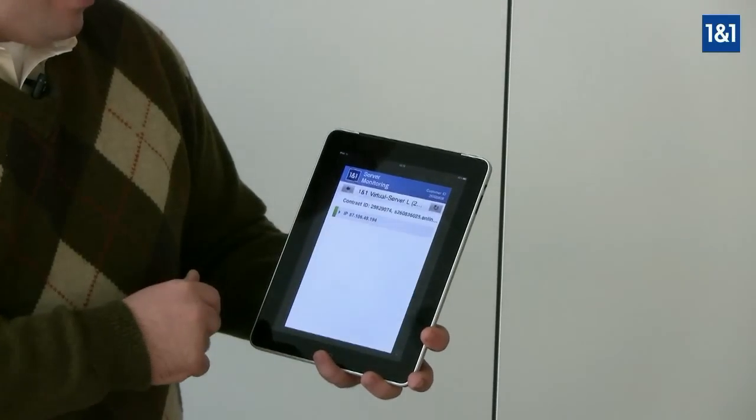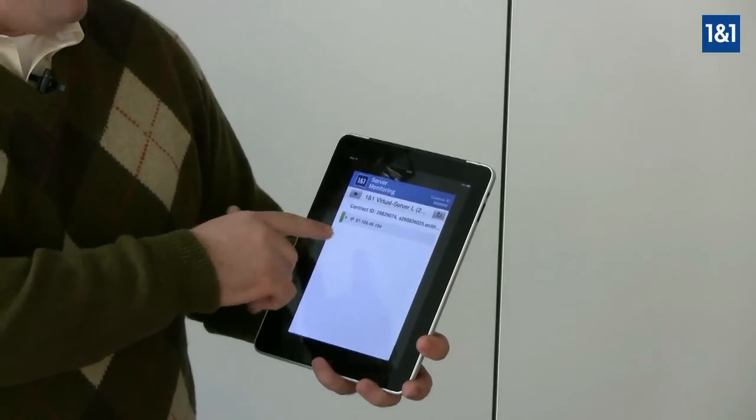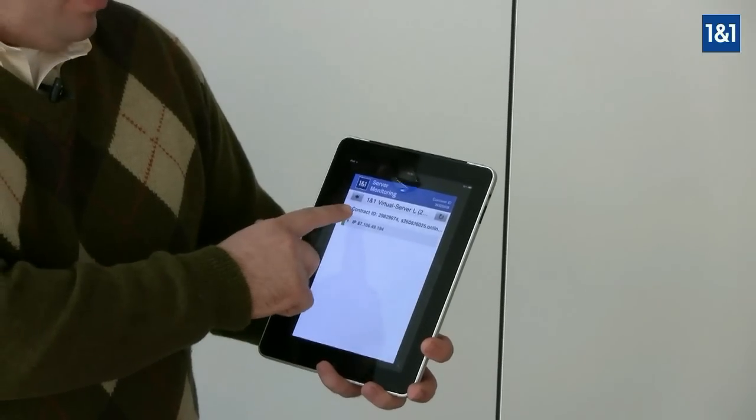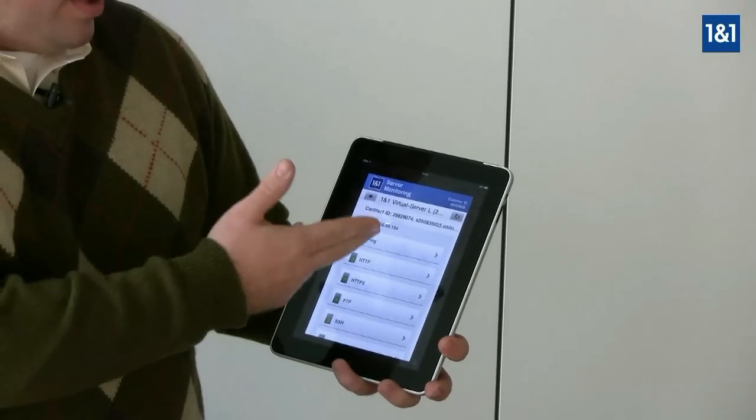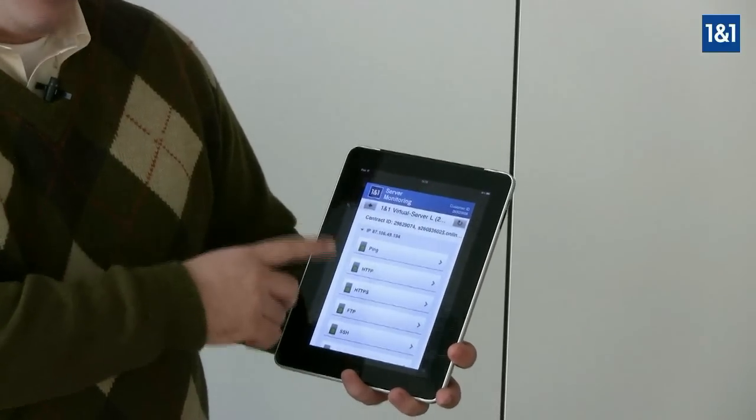To view the server, we're going to simply click on that and you can see all the different IP addresses that are associated with this customer ID. With this IP address, we'll click on it and you'll be able to see all the services that are currently running right now for this IP address.